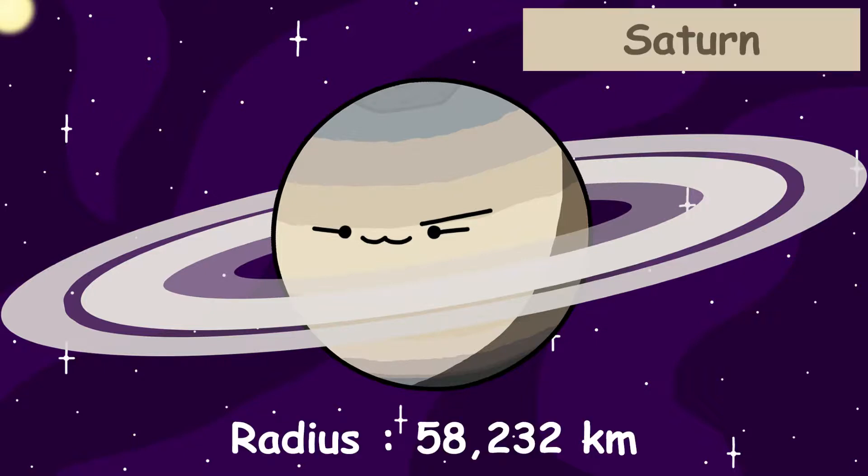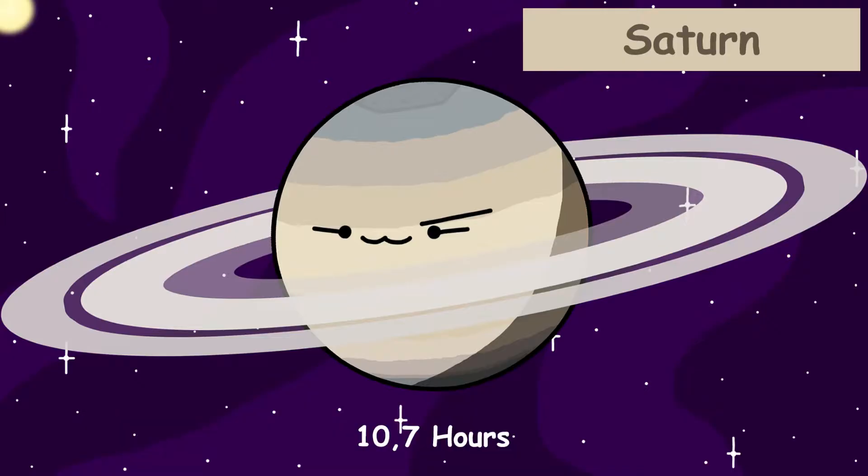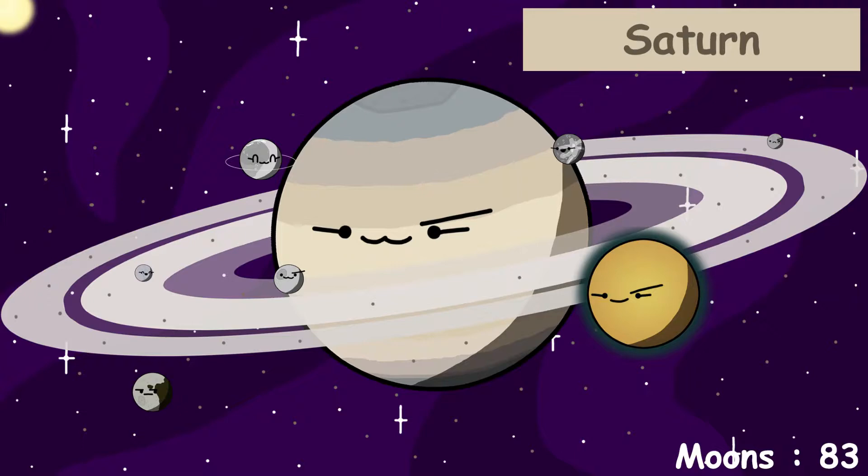Saturn has a radius of 58,232 kilometers and an average surface temperature of negative 140 degrees Celsius. A day on Saturn lasts only 10.7 hours, while a Saturnian year lasts 29.4 Earth years. Saturn is very known for its extensive and very beautiful ring system. It extends up to 282,000 kilometers from Saturn's surface. Saturn has 83 moons.